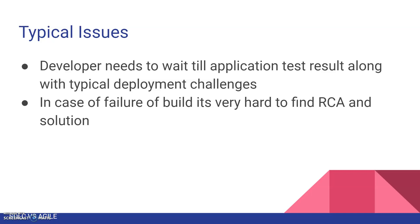In case of a build failure in SDLC it is very hard to find the root cause because many commits are done simultaneously with no integration process, and the team is split into large chunks. In Agile, when a small feature commit goes to the Git repository, it automatically triggers a Jenkins build which immediately gives feedback on whether the build passed or failed. If it fails, the developer can immediately see what went wrong and fix it. This fast feedback loop is why the market is moving toward Agile.